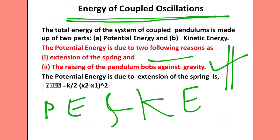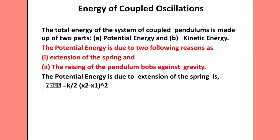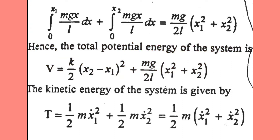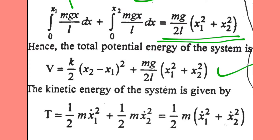The potential energy due to extension of the spring is equal to K/2 * (X2 - X1)^2. It is equal to the integration from 0 to X1 for the first pendulum in the coupling, plus 0 to X2 of (mg*X / L) dx for the second pendulum in the coupling. That is equal to (mg / 2L) * (X1^2 + X2^2). Hence the potential energy of the system is given by V = K/2 * (X2 - X1)^2 + (mg / 2L) * (X1^2 + X2^2).